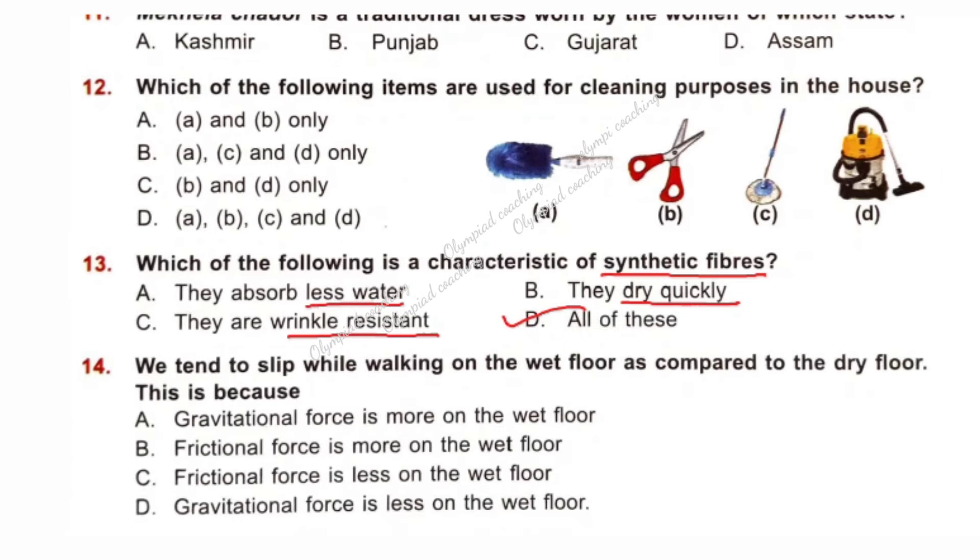Question number 14. We tend to slip while walking on the wet floor as compared to the dry floor. This is because what helps us walking on the floor? It is frictional force. Frictional force is more in dry floor whereas less in wet floor because water acts as a lubricant. So, correct answer is Option C. Frictional force is less on the wet floor. So, walking on the wet floor we tend to slip.